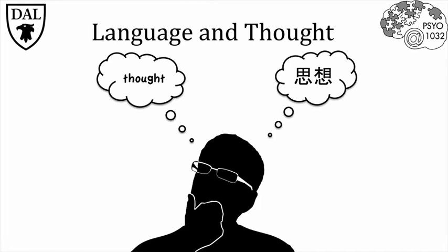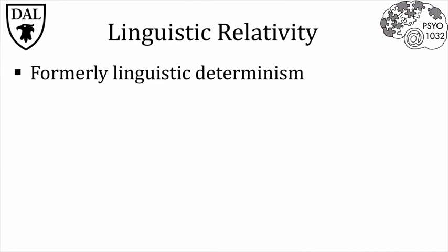There is some evidence for this, by looking at how languages with different attributes influence people's judgments. Linguistic relativity, originally called linguistic determinism, is the idea that language influences the way we think. This perspective is also called the Sapir-Whorf hypothesis, after Edward Sapir and his student Benjamin Lee Whorf.